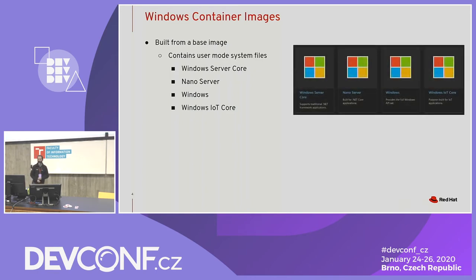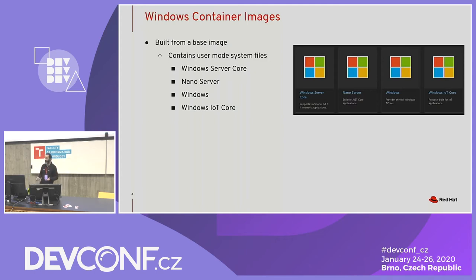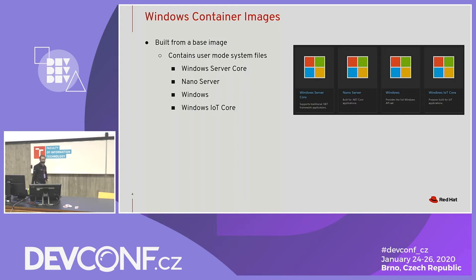They provide base images as the building block for all containers, and you pick one based on your application. If you have a traditional .NET application, you'd use Windows Server Core. If you have a more complex application requiring the full set of Windows APIs, you'd pick the Windows version of the container image. They also have IoT Core if you're writing an IoT app.